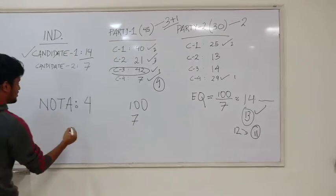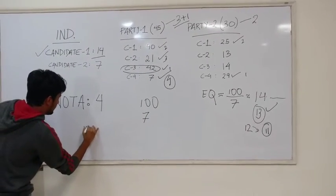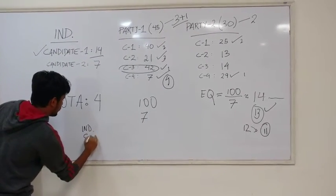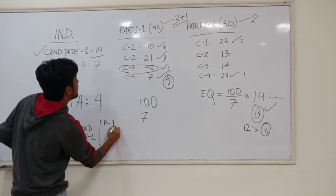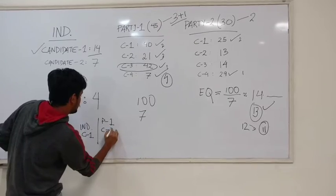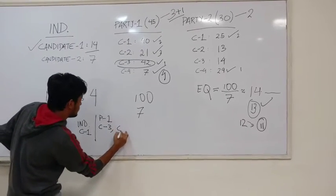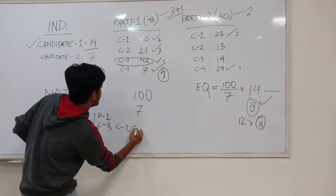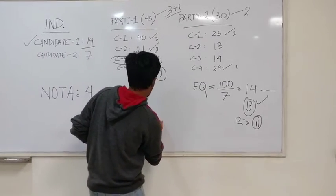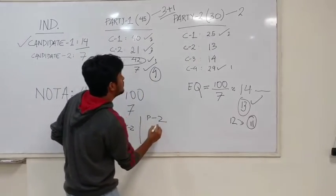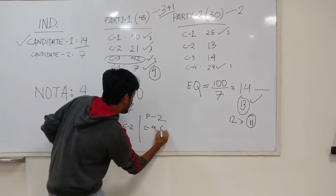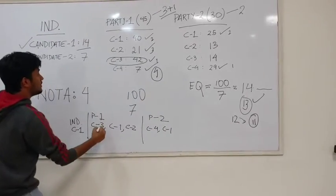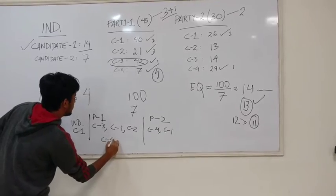In order it would essentially be the independent candidate, candidate 1. Party 1 candidate 3, candidate 1, candidate 2. Then party 2 candidate 4 and candidate 1, and finally candidate 4 of party 1.